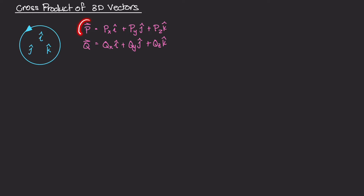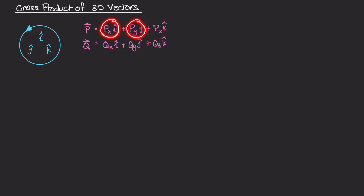Let's say you have two vectors that are three-dimensional. In this example, we have vector P and vector Q. I've represented these vectors in terms of their components: the PX component, the PY, and the PZ component of vector P, and then the same thing for vector Q.